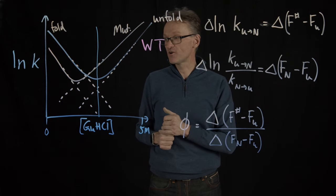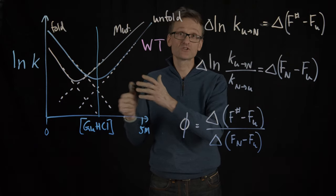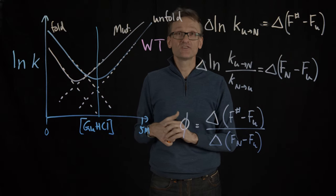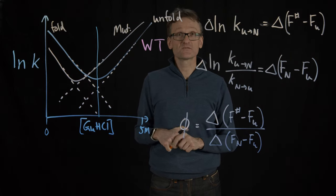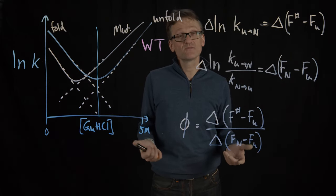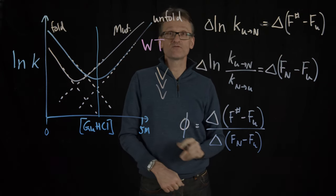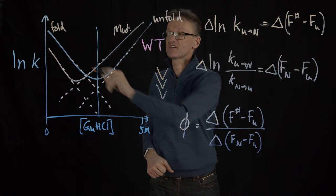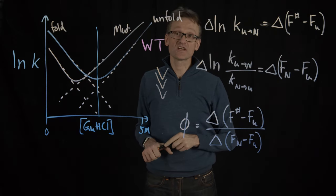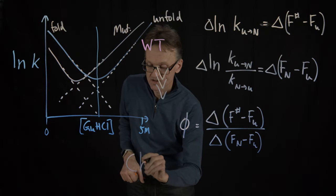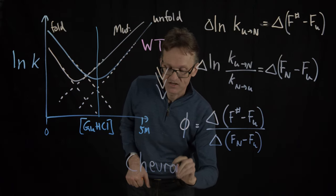So I'm going to show you a few of these studies and how people have used chevron plots to define transition states. Why are they called chevron plots? Well it has to do with this small mark that you might see on military uniforms or so. This is the chevron and you can probably recognize the shape of the plot. So, chevron plot.